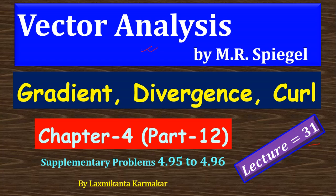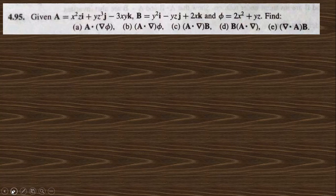In this video, I am going to solve supplementary problems 4.95 to 4.96 of chapter 4, which covers gradient, divergence, and curl. Going directly to question 4.95: since vector a, vector v, and phi are given, we need to find the required quantities.